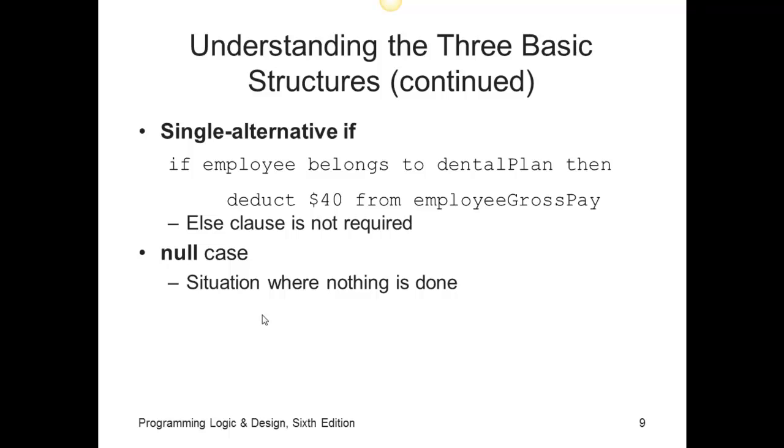Another example of a decision structure is the single alternative if. In other words, if the condition evaluates to true, we do some action, otherwise we do nothing. In this example, if employee belongs to the dental plan, then deduct $40 from employee gross pay. There is no else clause because there is no alternative. There isn't that second alternative. If it's true, deduct $40. If not, exit the structure.